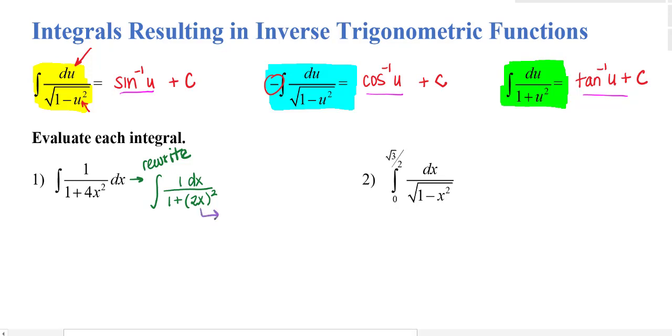So my u is 2x, which means my du will be 2 dx. So I'm going to multiply the inside by 2 to get my 2 dx there. And then I will multiply the outside by a half, because again half of 2 is 1, and so I'm not changing the value, I'm just changing the way this appears, the inside-outside method.